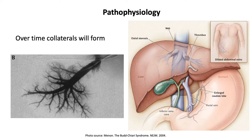Additionally, the caudate lobe can hypertrophy. The caudate lobe of the liver, seen behind the portal vein, actually drains directly into the inferior vena cava. In response to liver necrosis, the caudate lobe will hypertrophy, and as it does, it may compress the IVC. Ultimately, the patient could still present with significant ascites and lower extremity edema from this IVC compression. And if no collaterals or compensation occurs and the patient progresses to cirrhosis, they will additionally have ascites and lower extremity edema.